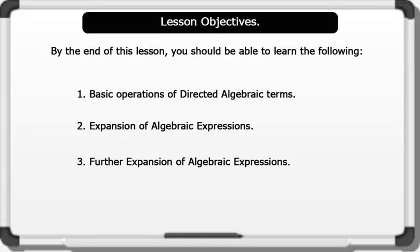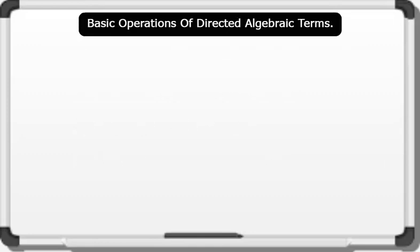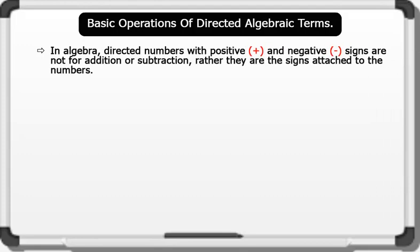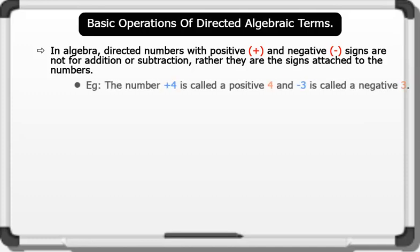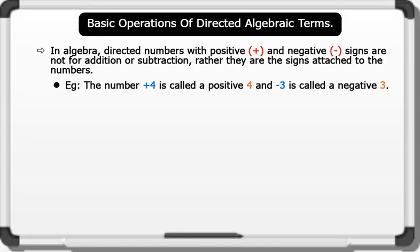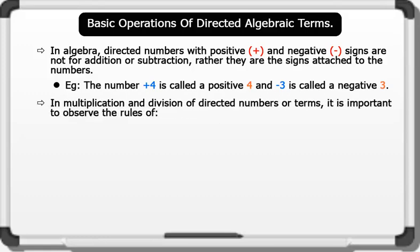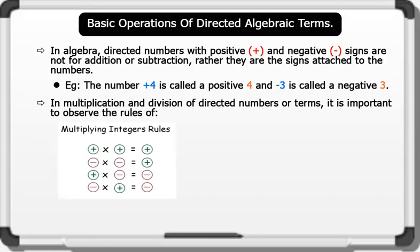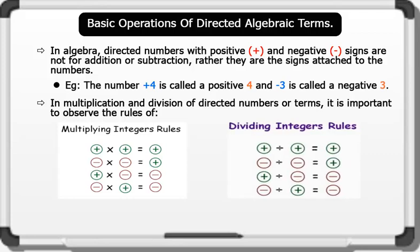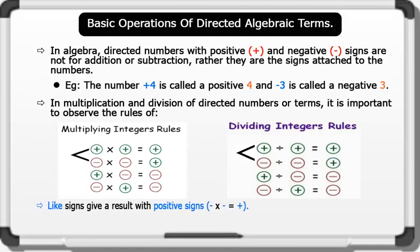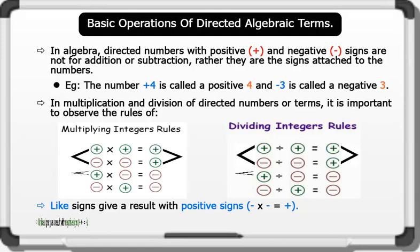Basic operations of directed algebraic terms. In algebra, directed numbers with positive and negative signs are not for addition or subtraction — rather they are the signs attached to the numbers. For example, plus 4 is called positive 4, and minus 3 is called negative 3. In multiplication and division of directed numbers or terms, it is important to observe the rules. The diagrams on the board remind us of these rules: like signs give a result with a positive sign, while unlike signs give a result with a negative sign.